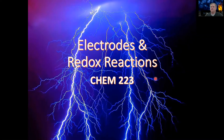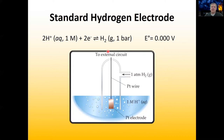This is lecture 13 for Chem 223. Today we're going to be talking about electrodes and redox reactions. What I have here is a picture of what we call a standard hydrogen electrode. The reduction potentials of every reaction are measured relative to this electrode. We define this electrode as having a reduction potential of zero.